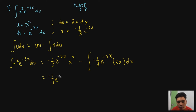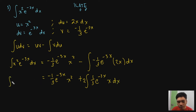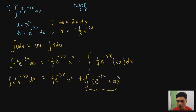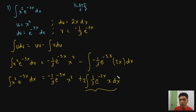Simplifying: we get (-1/3)·x²·e^(-3x) + the integral of (2/3)·x·e^(-3x) dx. Notice this remaining integral still requires integration by parts — it's normal to have IBP within IBP. For this second integration by parts, u = x and dv = e^(-3x) dx.